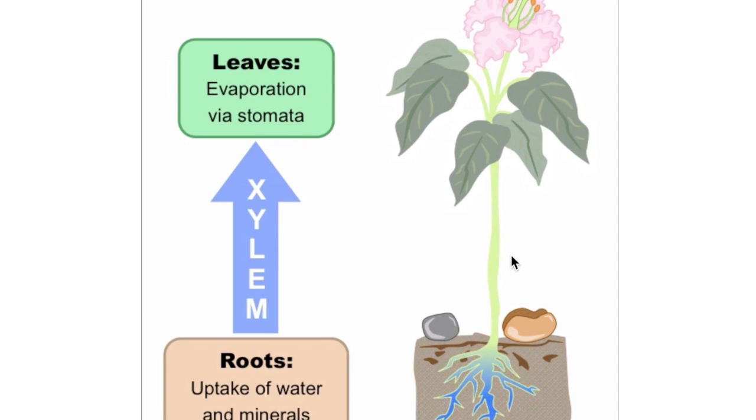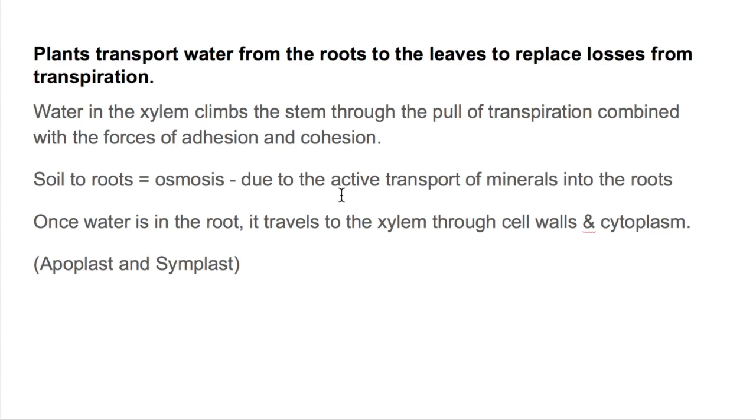How does the water go up this way, even though this is against the rules of gravity? This is because of three reasons: the pull of transpiration and adhesion and cohesion.